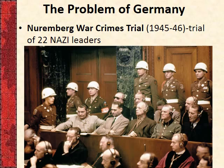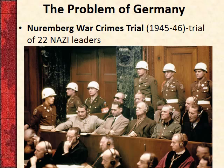The Nuremberg Trials — what do we do with the guys who were in charge of Nazi Germany? Hitler helped us out and killed himself, but you've got Hermann Goering, Rudolf Hess, and a bunch of other Nazi officials. They were the architects of the Holocaust and the invasion of Eastern and Western Europe, committing all of these horrible atrocities. Their excuse was basically 'Hitler told me to do it.' So we put them on trial.